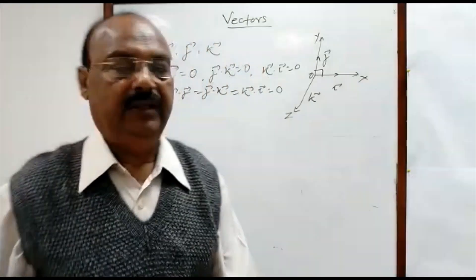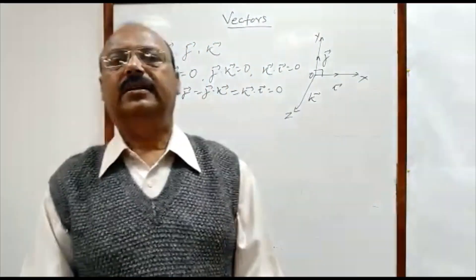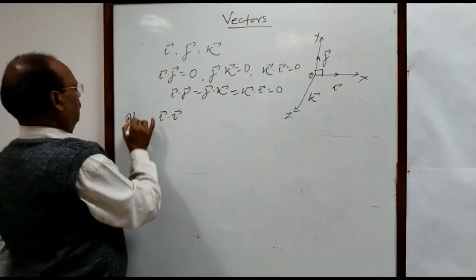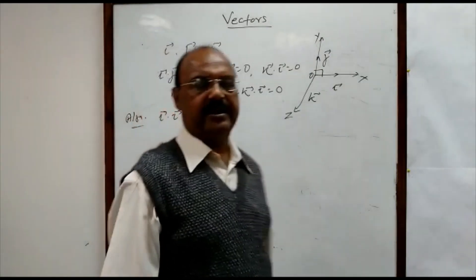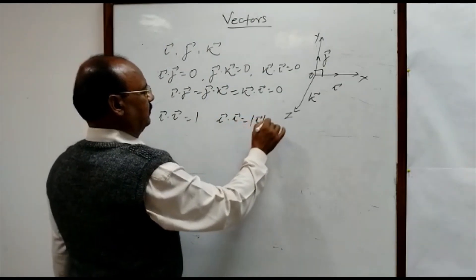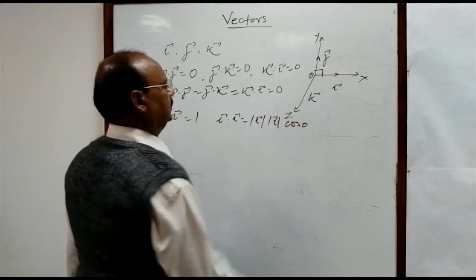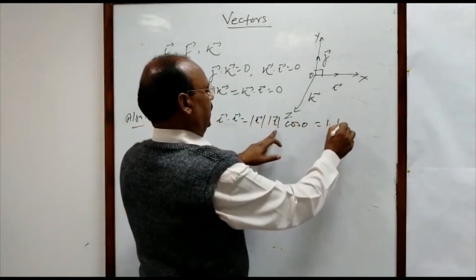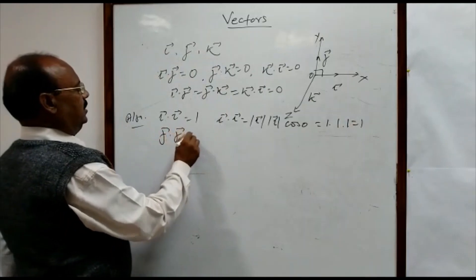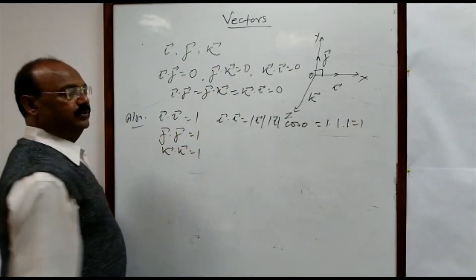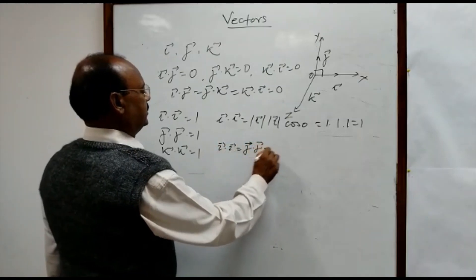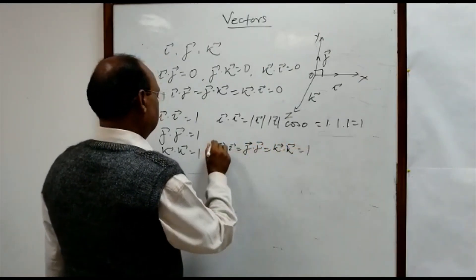Whenever a unit vector is dotted with itself, such as i dot i, the result equals 1. We can understand this because i dot i equals the magnitude of i times the magnitude of i times cos 0 degrees, which is 1 times 1 times 1, giving 1. Similarly, j dot j equals 1 and k dot k equals 1. So we must remember: i dot i equals j dot j equals k dot k equals 1.